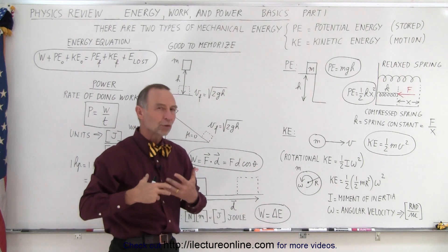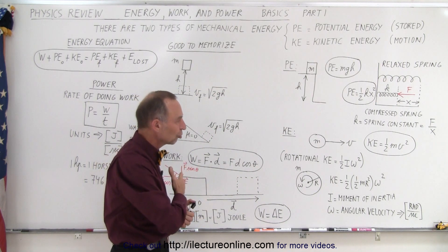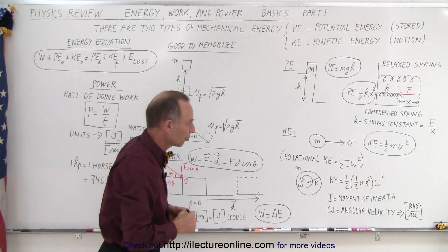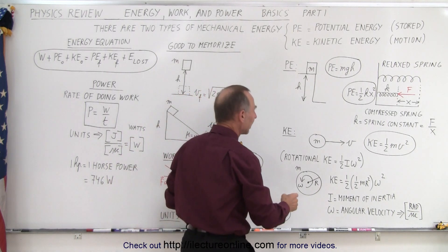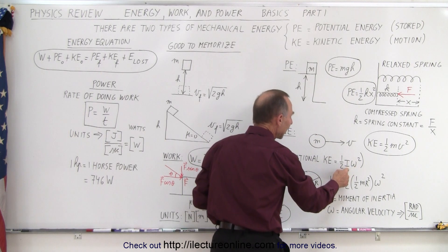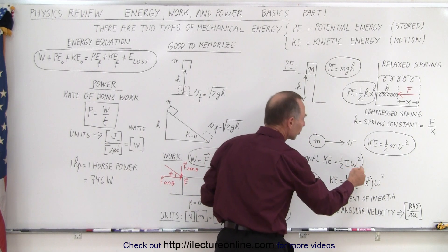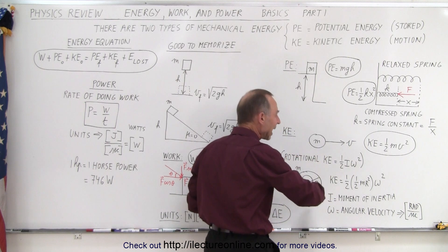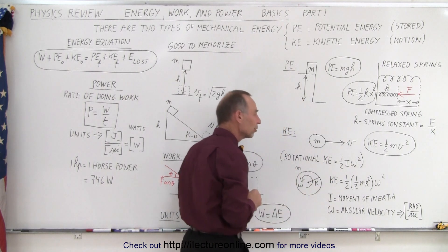There's also what we call rotational kinetic energy, which is usually covered in later chapters. But I just wanted to mention it, that the kinetic energy due to an object rotating is one-half I omega squared. I is what we call the moment of inertia, and omega is called the angular speed, or the radial speed.